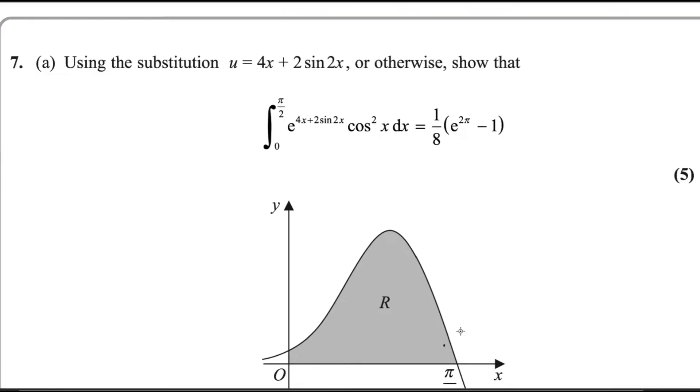First part: using the substitution u equals 4x plus 2 sin 2x or otherwise, show that the integral from 0 to π/2 of e to the power (4x plus 2 sin 2x) cosine squared x dx equals 1/8 times (e to the power 2π minus 1). One method is by using substitution. Otherwise we can use integration by parts method, but that is longer. It is easier by substitution.